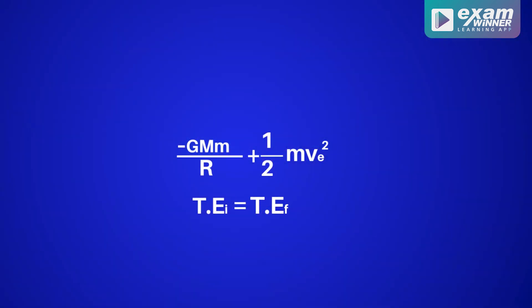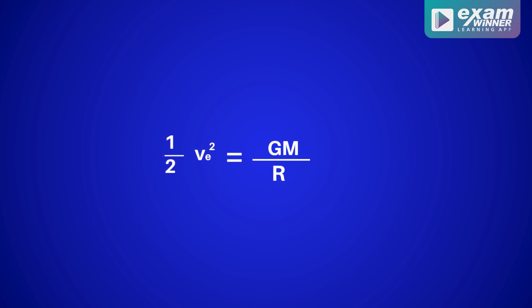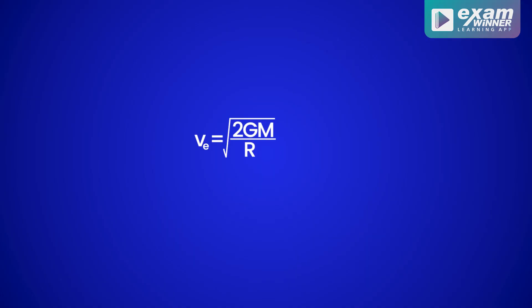Applying conservation of energy, initial total energy equals final total energy equals zero. So: minus GMm by R plus half m v_e squared equals zero. Rearranging: half mv squared equals GMm by R. Therefore, v squared equals 2GM by R, and escape velocity v_e equals the square root of 2GM over R.